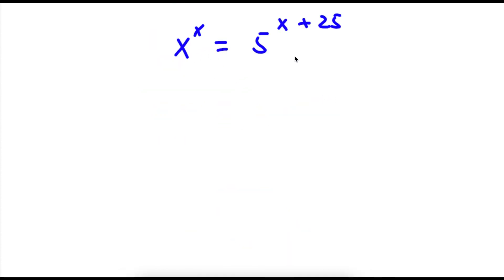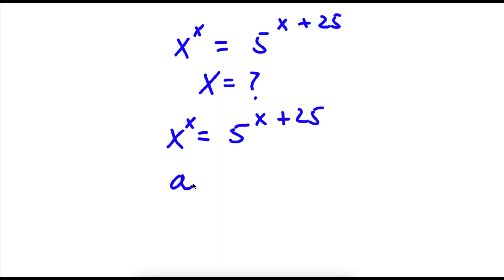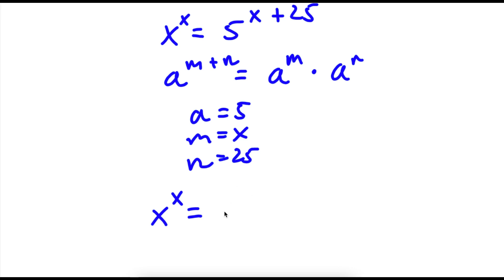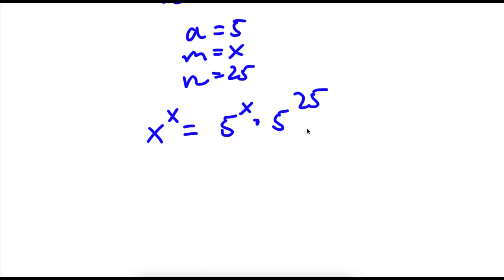Now we have x to the power of x is equal to 5 to the power of x plus 25, and we want to find the value of x. If I have something in the form a to the power of m plus n, this equals a to the power of m times a to the power of n. So here a equals 5, m equals x, and n equals 25. So I can rewrite 5 to the power of x plus 25 as 5 to the power of x times 5 to the power of 25. So now I have x to the power of x is equal to 5 to the power of x times 5 to the power of 25.